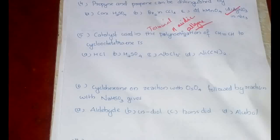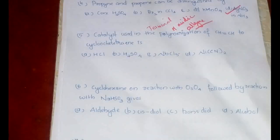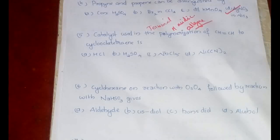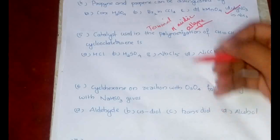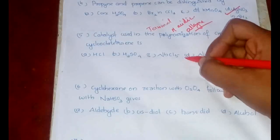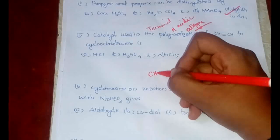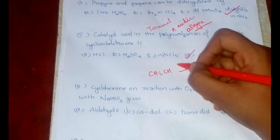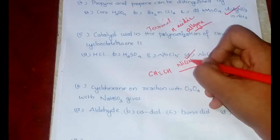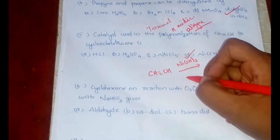Now to the fifth question: catalyst used in the polymerization of CH≡CH to cyclooctatetraene. The answer is option D: Ni(CN)2. It is a very important reaction. Please keep this one in mind. CH≡CH, there will be Ni(CN)2, then at 60 degrees Celsius and 15 bar pressure, along with this we will be having CaC2, that is calcium carbide, and THF as well.